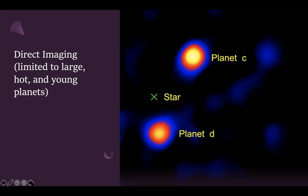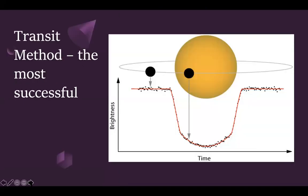There is also direct imaging — a way in which we can kind of actually see these planets. However, very few exoplanets have been detected this way because the luminosity of the planet is quite small compared to the luminosity of the star. Through this method we can only detect large, hot, and young planets, so more Earth-like planets cannot be detected this way.